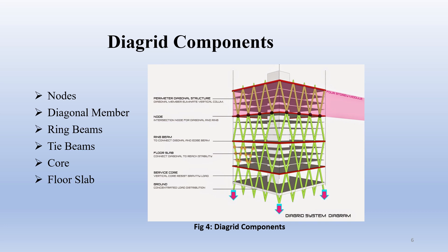Ring beams comprise a ring structure at the periphery of the building, connected at the nodes which are further connected to the diagrid columns. Ring beams are extremely important in maintaining the stability of the system. Tie beams are used to transfer load from the RC core to the diagrid structure. Cores are used to carry gravity load. Floor slabs are used to connect diagonal members to achieve stability.